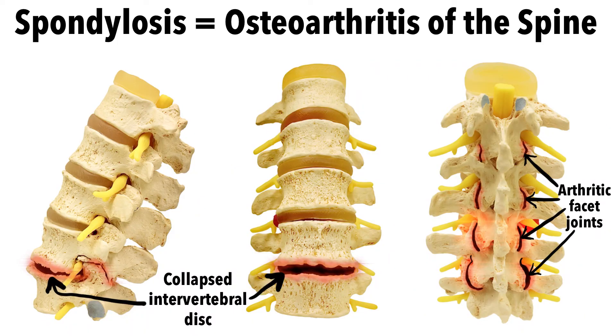As the annulus fibers tear, the nucleus pulposus leaks out through these tears and the entire disc flattens out. Flattening of the disc brings the vertebral bodies closer together. This decrease in overall disc height also forces the facet joints in the back closer to one another, and this leads to facet joint arthritis or osteoarthritis. The somewhat confusing medical term for this is spondylosis.